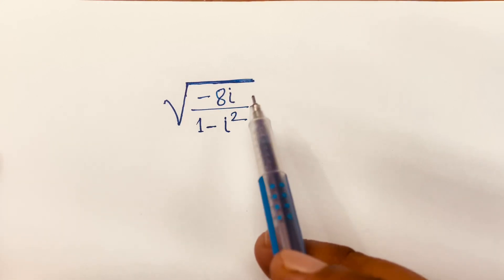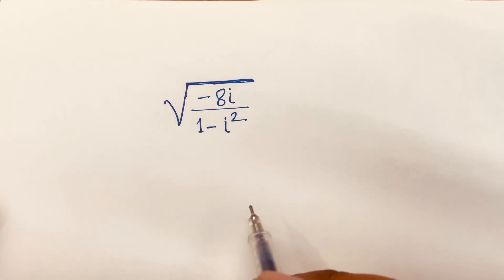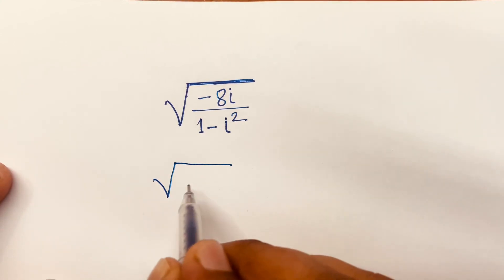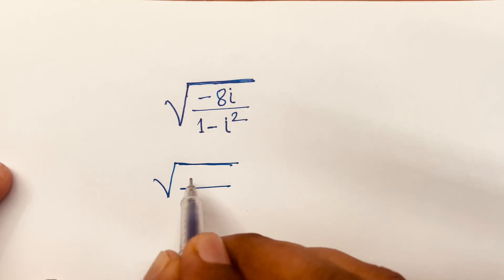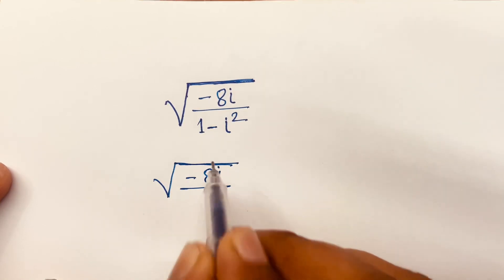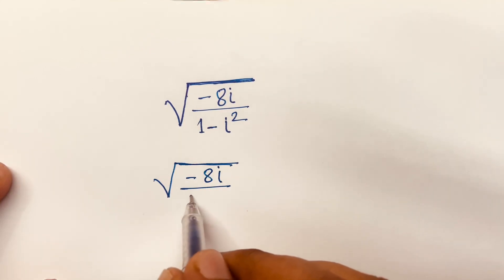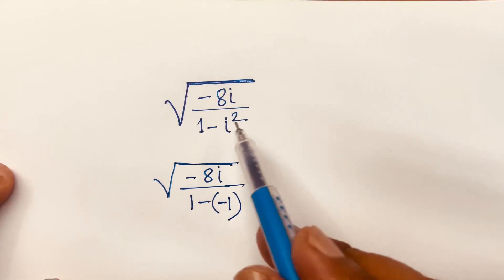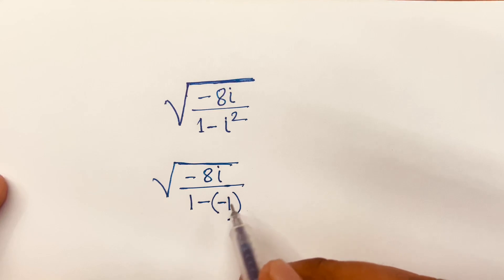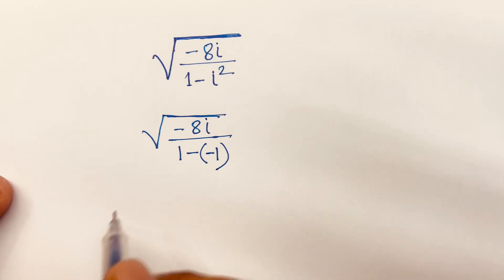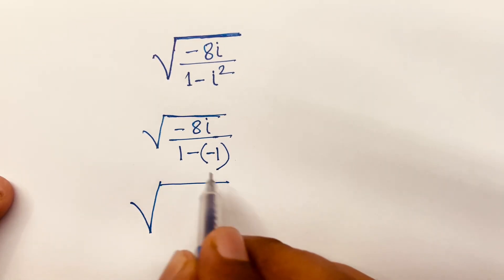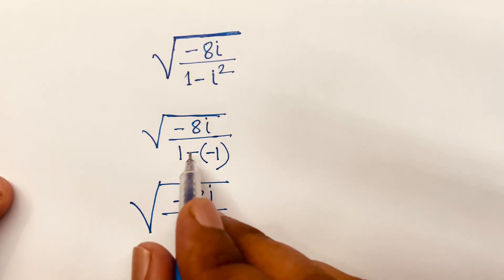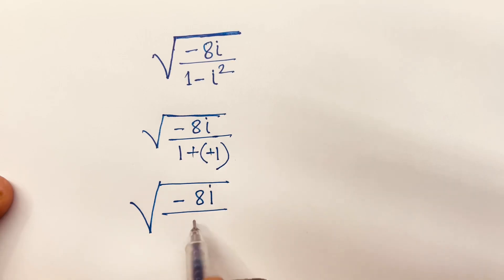How to solve square root of minus 8i over 1 minus i squared? It will be square root of minus 8i over 1 minus minus 1, because we know that i squared is equal to minus 1. So here is square root minus 8i over minus minus plus, which gives us 2 in the denominator.